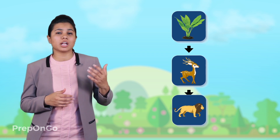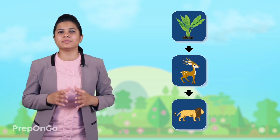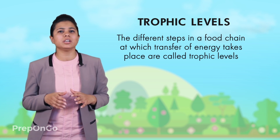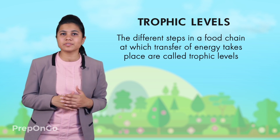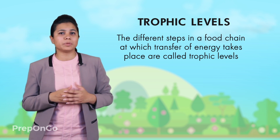Hello everyone. In the last video, we have seen different examples of food chains. We have seen how food is transferred from one organism to another organism in a perfect sequence. Each organism in the food chain belongs to a particular category or group of organisms which behaves identically when it comes to obtaining energy.